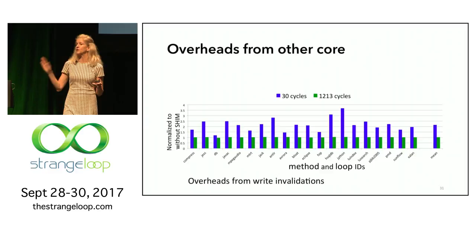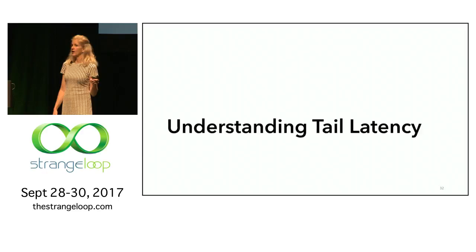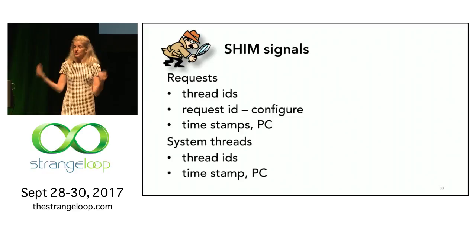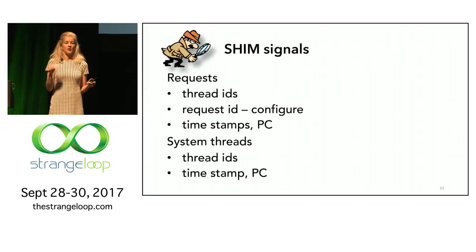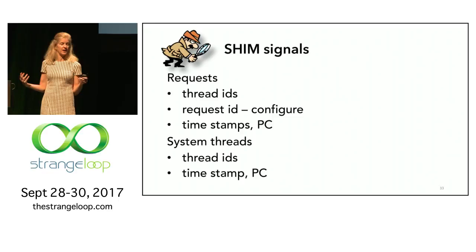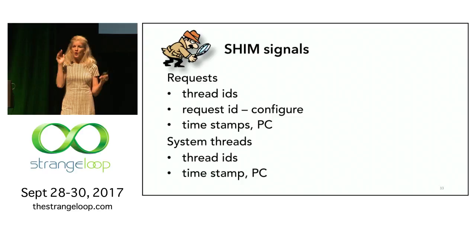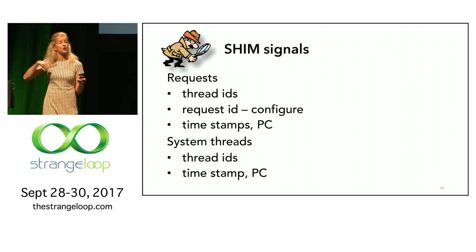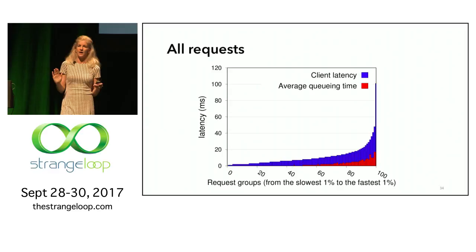Now that we have the right mechanism, we configure our Shim thread to look at thread IDs, timestamps, and program counters — things we can always read out of memory. We also need to look at request IDs. The software just needs to expose a request ID so that when we do a sample, we know which request this thread is working on, since the same thread works on multiple requests. That's all we need to add to our program to get this to work.